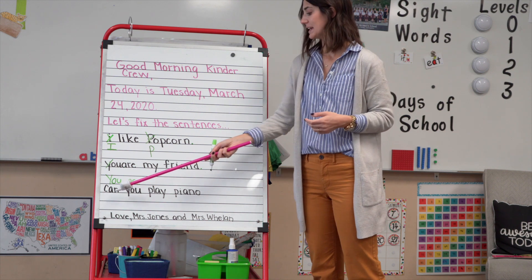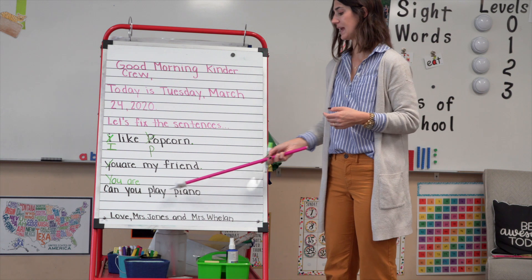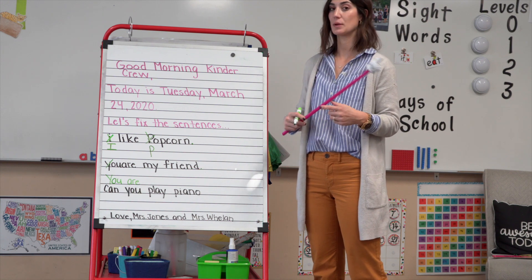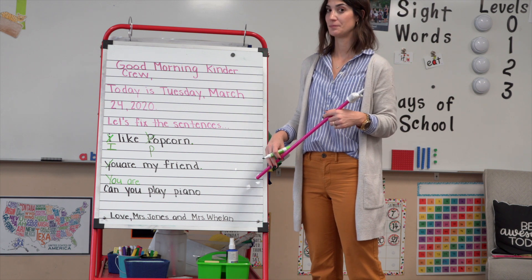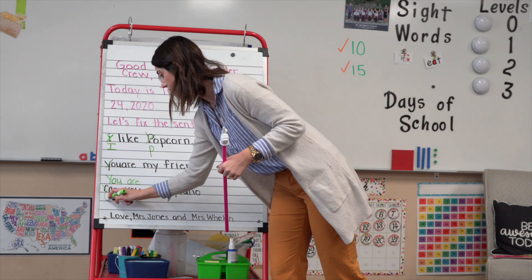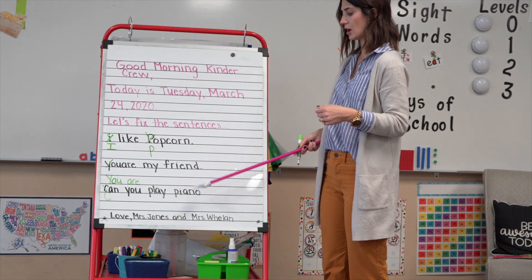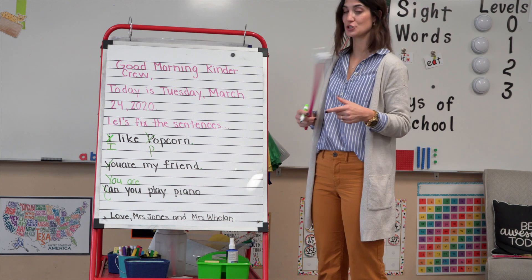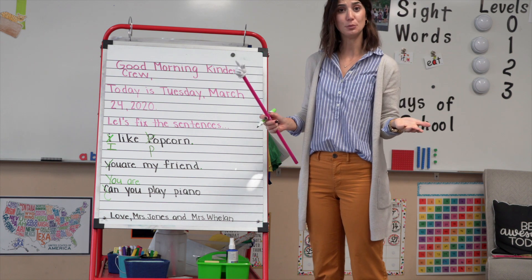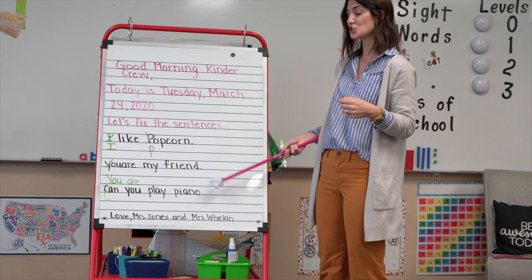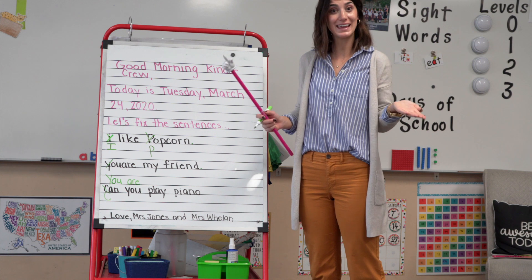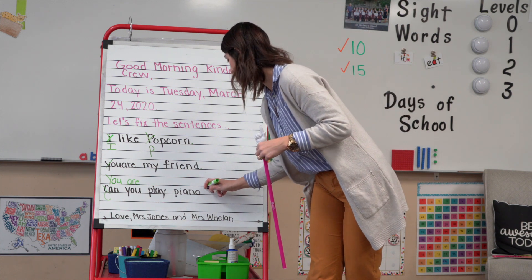And our last sentence: Can you play piano? Let's see what we're missing. Looking at the beginning of the sentence — the word can. The C needs to be a capital C. So I'm going to change that, make it a capital C. Can you play piano? We have our spaces. All of these letters are lowercase, which is correct. And at the end of our sentence — listen to the way I say this sentence. Can you play piano? So we do need our punctuation at the end, but it's not going to be a period. I'm asking a question, so I need to have a question mark.